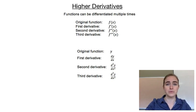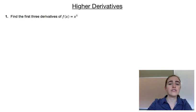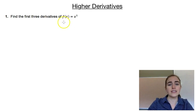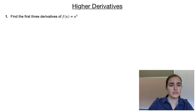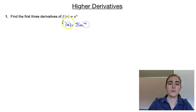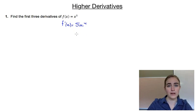Let's have a look at some examples. Our first example asks us to find the first three derivatives of f of x equals x to the power of 5. So if we differentiate that the first time, f dash of x would give us 5x to the power of 4 — bring the 5 out the front and reduce the power by 1. Then we'd just do it again.